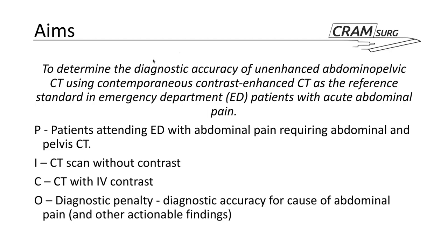If we translate this into a PICO format: the Patients are adults attending the emergency department with abdominal pain requiring an abdomen and pelvis CT scan. The Intervention is a CT without contrast, since that is not the standard of care. The Comparison — the gold standard — would be a CT with IV contrast. The Outcome, as the authors describe it, would be the diagnostic penalty: the loss of diagnostic accuracy associated with the use of a non-contrast CT.